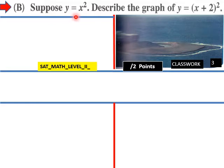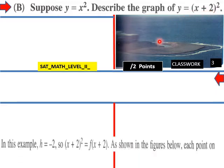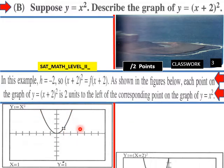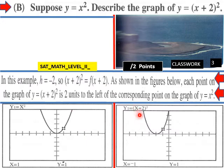For part b, suppose y = x². Describe the graph of y = (x+2)². In this example h = −2, so (x+2)² = f(x+2). As shown in the figures, here's y = x² and here is y = (x+2)². We move to the left two units. The graph of y = (x+2)² is two units to the left of the corresponding point on the graph of y = x².